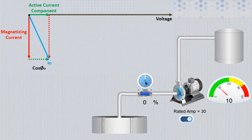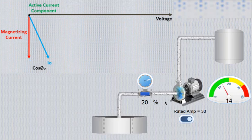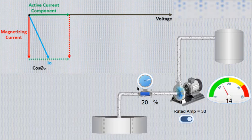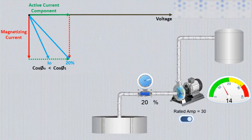Now, load is increased 20 percent by opening suction valve to 20 percent. As this load is active part of power, this tends to increase the active component of current, while magnetizing component will remain same. The resultant vector of current will move towards voltages causing improved power factor.